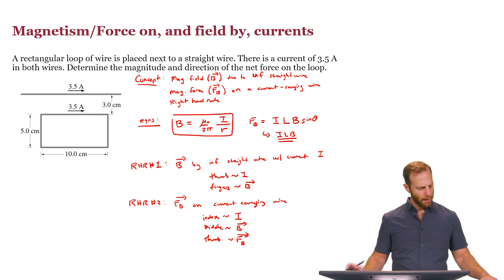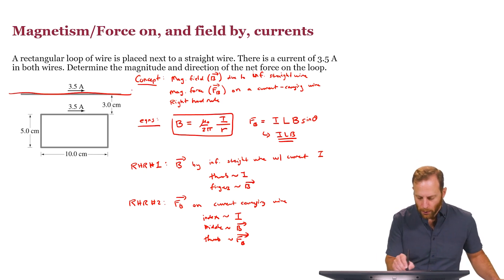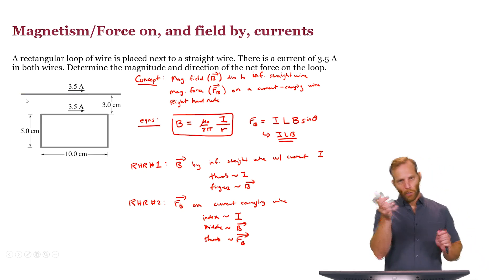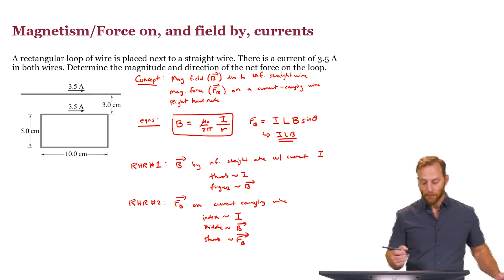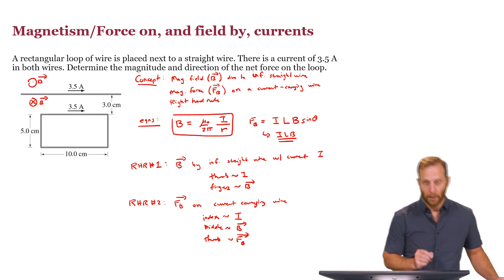Now with all that in mind, we can start to make a little more progress here. Thinking about right-hand rule number one, we see this long straight current here with current pointing to the right. Given the right-hand rule, that tells us that the magnetic field points into the page on this side, and it points out of the page on the other side.